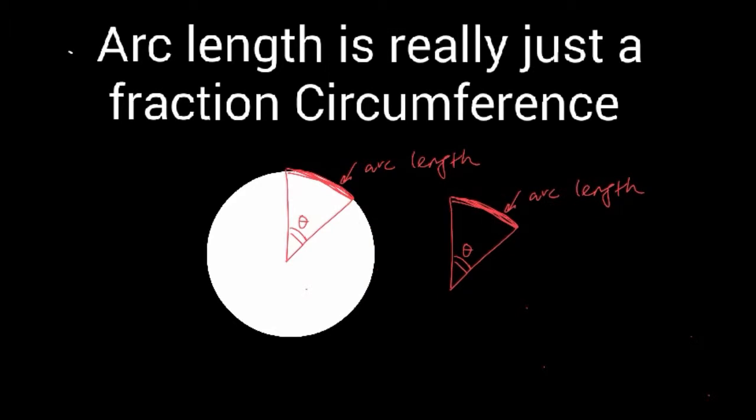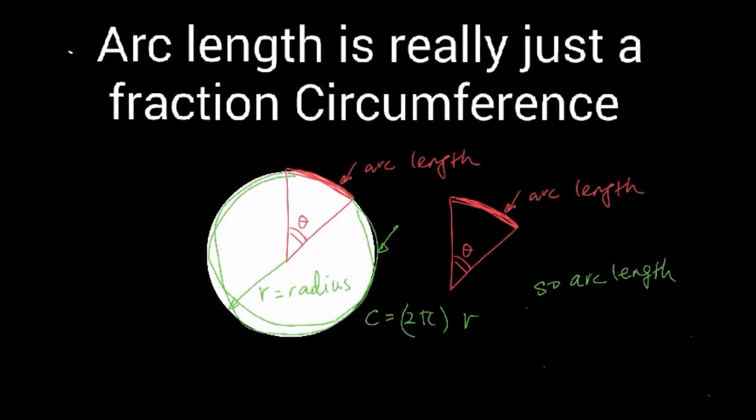Now, if you take the slice of pie, here's the arc length. Since we know the circumference is 2πr, I'm drawing here in green 2πr over here, where r is the radius, and you can see arc length is a fraction of the entire circumference.